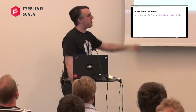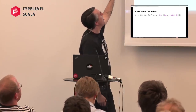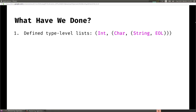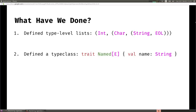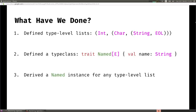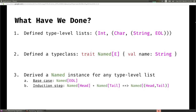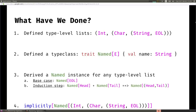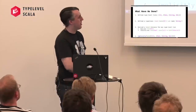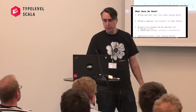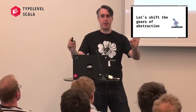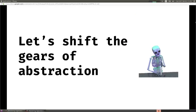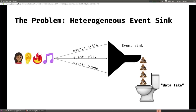So what have we done? We defined a type-level list, then defined a type class called Named which associates with each type a string. We derived a Named instance for any type-level list by starting with a base case for Named[EOL] and doing an induction step with an implicit method that says 'if you have a name for the head and a name for the tail, you can produce a name for the tuple of head and tail.' We showed at the altar that it gives almost the right answer. With that, I think we're ready to shift the gears of abstraction and show you how we solved the heterogeneous event sink problem using type class induction.